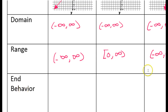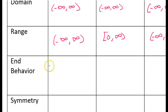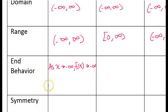Now let's talk about end behavior. Looking at f(x) = x, on the left it's falling and on the right it's rising. So the end behavior is: as x approaches negative infinity, f(x) approaches negative infinity — meaning on the left end it is falling. And as x approaches positive infinity, f(x) approaches positive infinity — meaning on the right it rises.